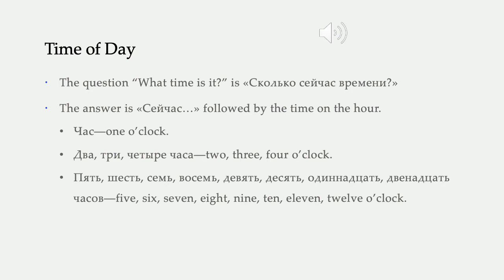Now let's talk about time of day. We are just going to learn time on the hour — time off the hour is much more complicated, and we will learn it later. If you want to ask what time is it, you say: сколько сейчас времени? Literally, how much time right now? Час is one o'clock — it literally means hour, but we just say час to mean one o'clock. And then we answer by saying сейчас followed by the time.